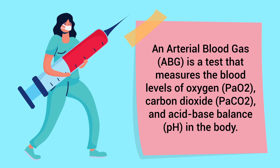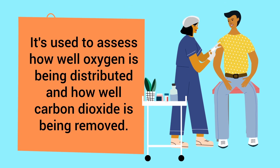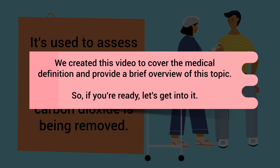An arterial blood gas (ABG) is a test that measures the blood levels of oxygen, carbon dioxide, and acid-base balance in the body. It's used to assess how well oxygen is being distributed and how well carbon dioxide is being removed. We created this video to cover the medical definition and provide a brief overview of this topic.